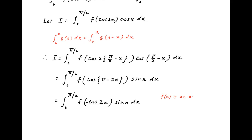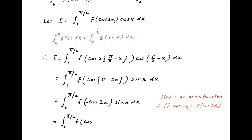Now we are given that f(x) is an even function, and therefore f(minus cos 2x) is equal to f(cos 2x). Using this result the value of I is equal to integral 0 to pi upon 2 of f(cos 2x)·sin(x) dx.